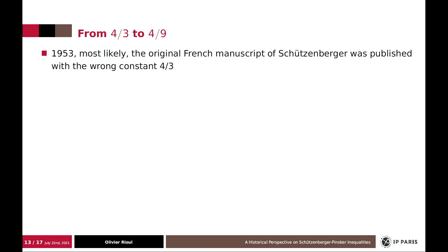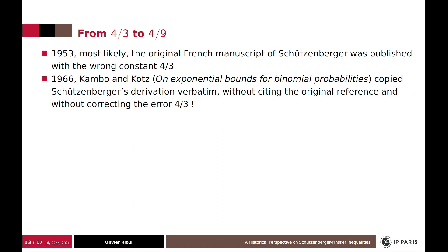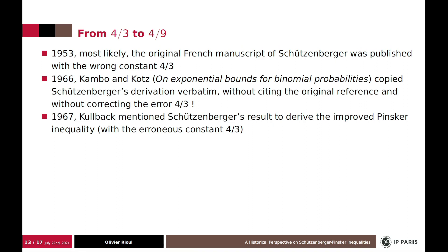And so what happened with the constant three over four and three over nine? Well, I investigated this in detail. And I found that most likely in 1953, the original French manuscript had an error. It had the wrong constant. And then there was Khambo and Kurtz who published a paper by copying Schützenberger derivation verbatim, but without mentioning the original reference and without correcting the error.